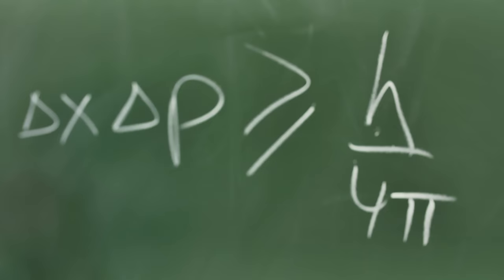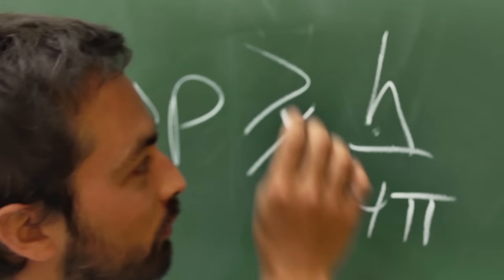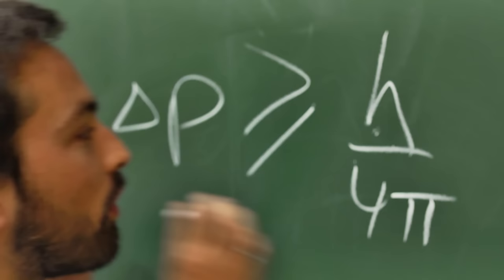Now h is Planck's constant. And that deserves a video all to itself, like this one by 60 Symbols. But for our purposes, it's just a very small number. So in our everyday lives, we don't come up against this uncertainty relation because everything is much bigger than h.